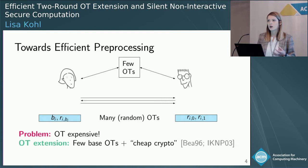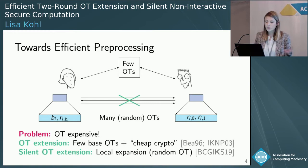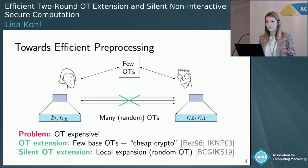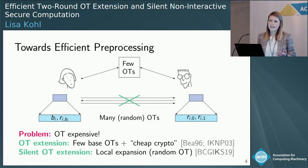One downside of this approach is that you still have a lot of communication — linear in the number of OTs you want to generate. In a previous work, we constructed a silent OT extension where, because if you just care about random OTs, you can get something better with just getting pseudo-random OTs. This is basically getting rid of the communication.